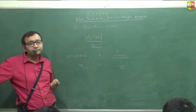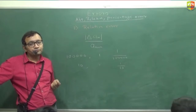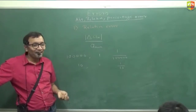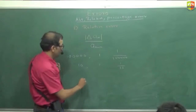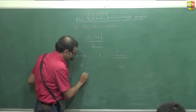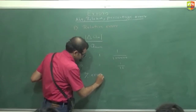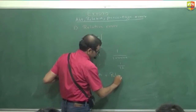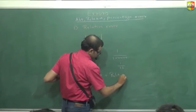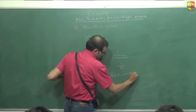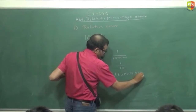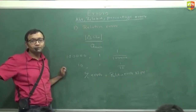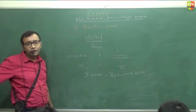What is the percentage error? Relative error multiplied by 100 is percentage error. So percentage error is relative error into 100. Simple.